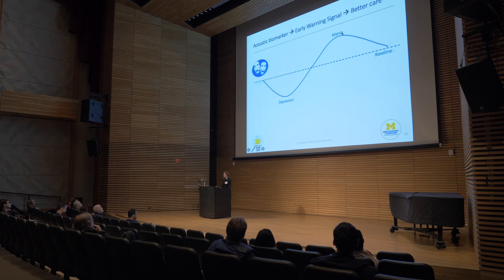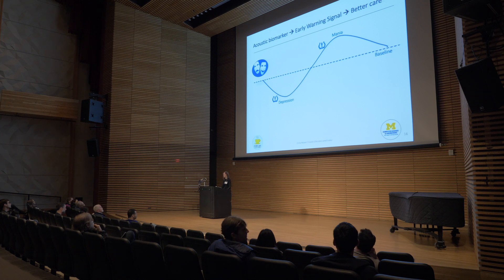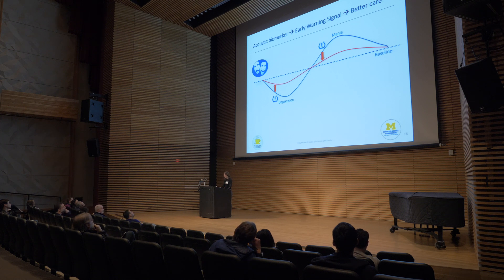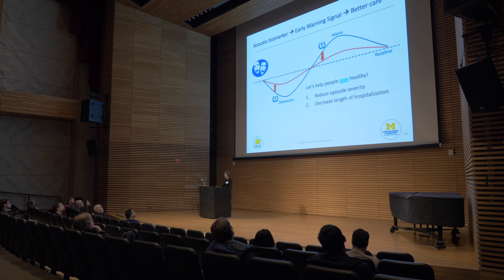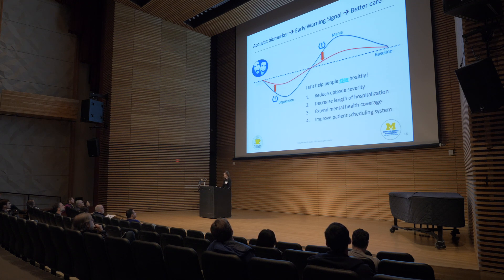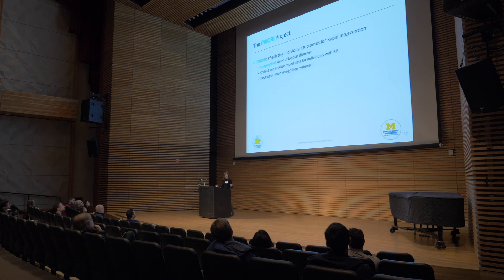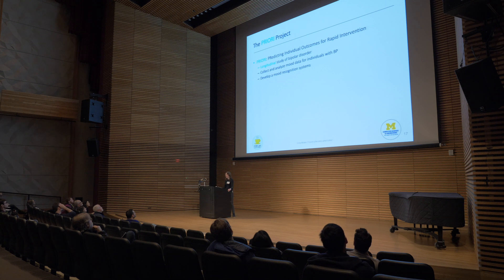That's what we've been trying to do — come up with new speech biomarkers that will allow us to intuit that there's a problem on the horizon so that people can get access to care when they need it. Instead of swinging down into lower lows of depression and heightened highs of mania, we can keep people on a more stable baseline. Since we're near Detroit, we use the analogy of the check engine light: if we can know that someone is having a risky period of time, we can get them the care they need, hopefully averting these swings. Our goal is to help people stay healthy, reducing episode severity, decreasing hospitalization length, and improving patient scheduling through the PRIORI project — predicting individual outcomes for rapid intervention — collecting and analyzing large-scale data for people with bipolar disorder to develop mood recognition systems.